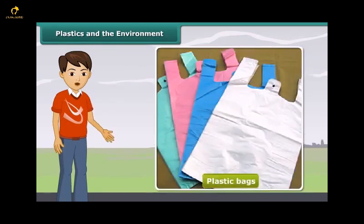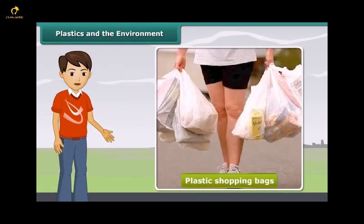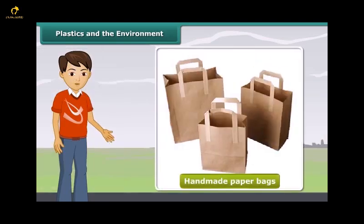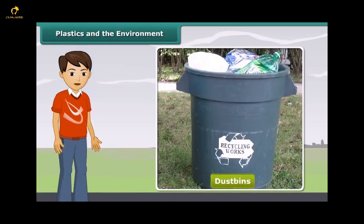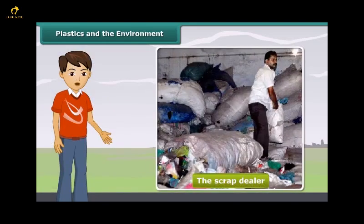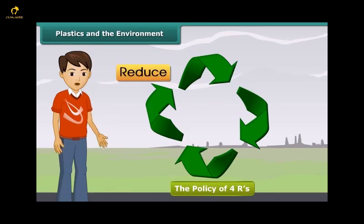There are a number of steps that we can take as environmentally conscious citizens to safeguard our environment from the growing menace of plastics. We can replace plastic shopping bags with jute bags or handmade paper bags. Instead of littering everywhere, particularly on roads, we should put plastic objects in the dustbins marked as non-biodegradable, thus segregating them from biodegradable wastes. Sell plastic scraps to the scrap dealer for recycling. Adopt the policy of 4 R's: reduce, reuse, recycle and recover.